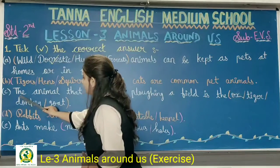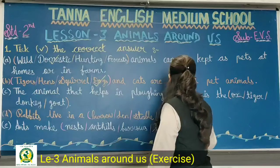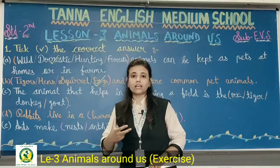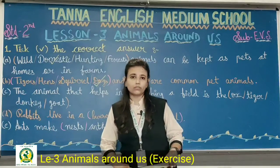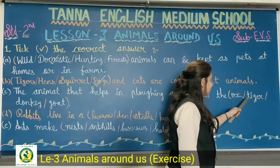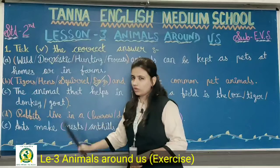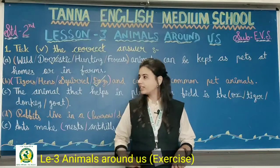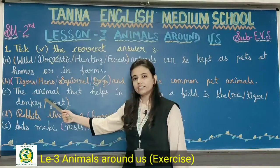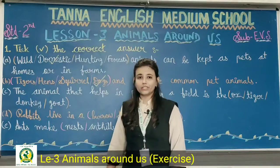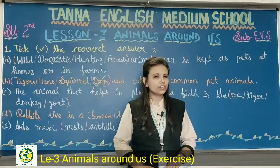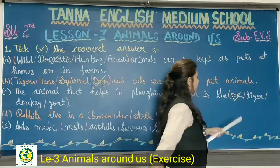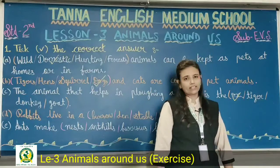Next question: the animal that helps in plowing a field is the dash. Aise kaunse animals hote hai? And your options are: ox, tiger, donkey, goat. Tiger help karte hai? No — woh toh wild animals hai na, woh toh forest mein rehte hai. Then donkey — donkey carries loads. Goat gives us milk and meat — goat bhi help nahi kar sakta hai. So what is your correct answer? Ox. Very good. Ox is your correct answer. Sab ko ox option pe tick mark karna hai.